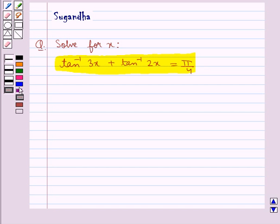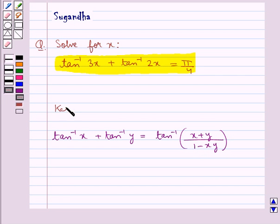Before we move on to the solution, let's recall one result according to which we have tan inverse x plus tan inverse y is equal to tan inverse of x plus y upon 1 minus xy. This is the key idea that we use for this question.